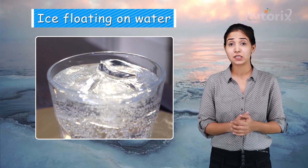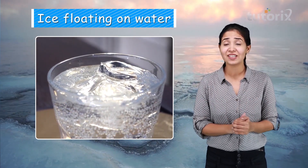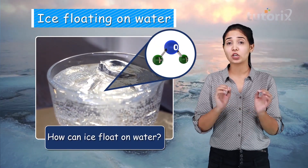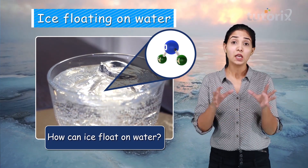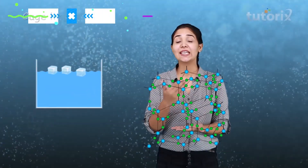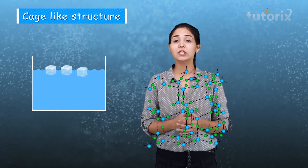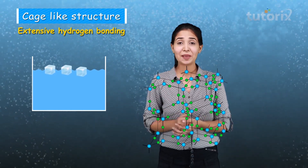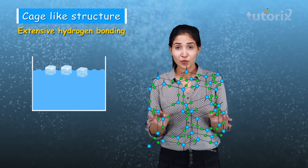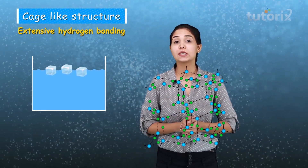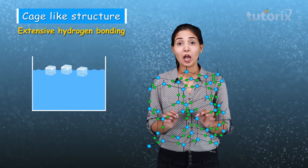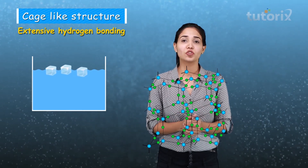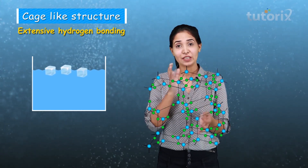Ice floats on water — we have been observing this. How is it possible? Again, the answer lies in the structure of water. In the case of ice, water molecules are present in a cage-like structure showing extensive three-dimensional hydrogen bonding. Due to this, there is an increased gap between the water molecules — more space — and hence ice floats on water.